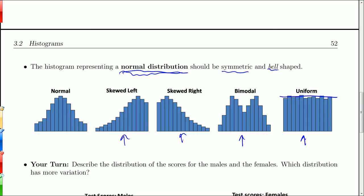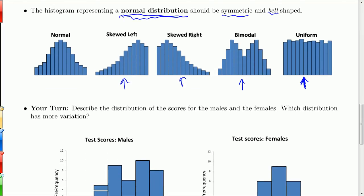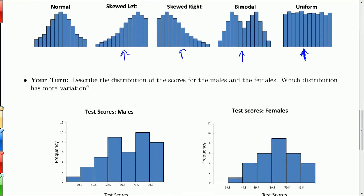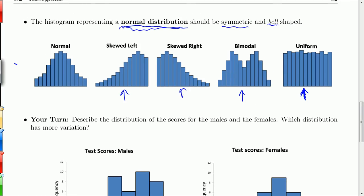A uniform distribution has a histogram that's relatively flat. It might not be perfectly flat — it's hard to get a perfectly flat uniform distribution — but if you looked at this histogram you'd say it represents a uniform distribution. Distributions come in all different shapes and sizes; these are not the only five options.